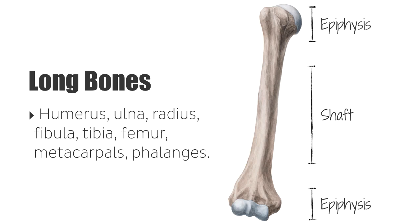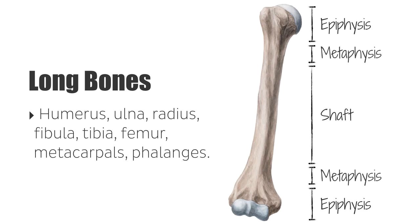The marrow cavity is enclosed by the diaphysis, which is thick compact bone. The epiphysis is mainly spongy bone and is covered by a thin layer of compact bone. The articular ends participate in the joints. The metaphysis connects the diaphysis and epiphysis at the neck of the bone and is the place of growth during development.